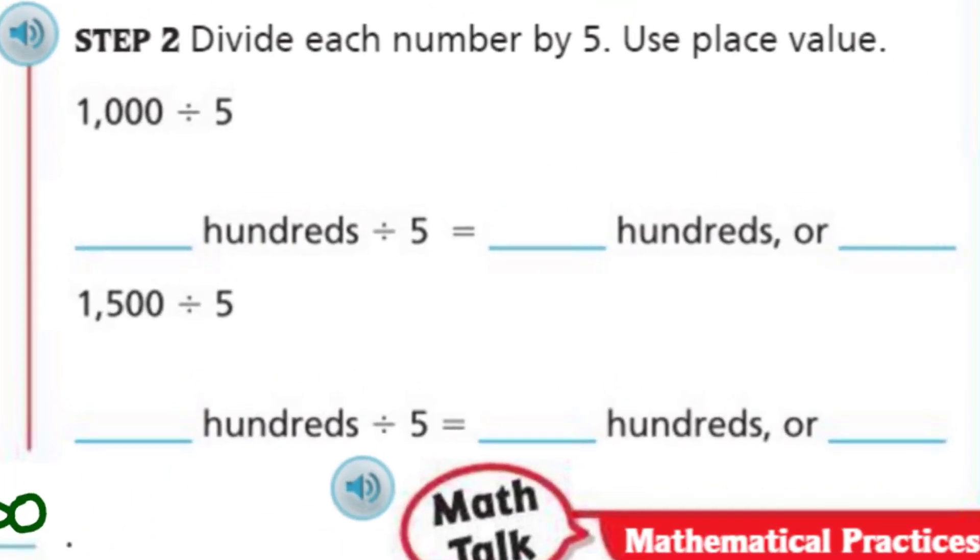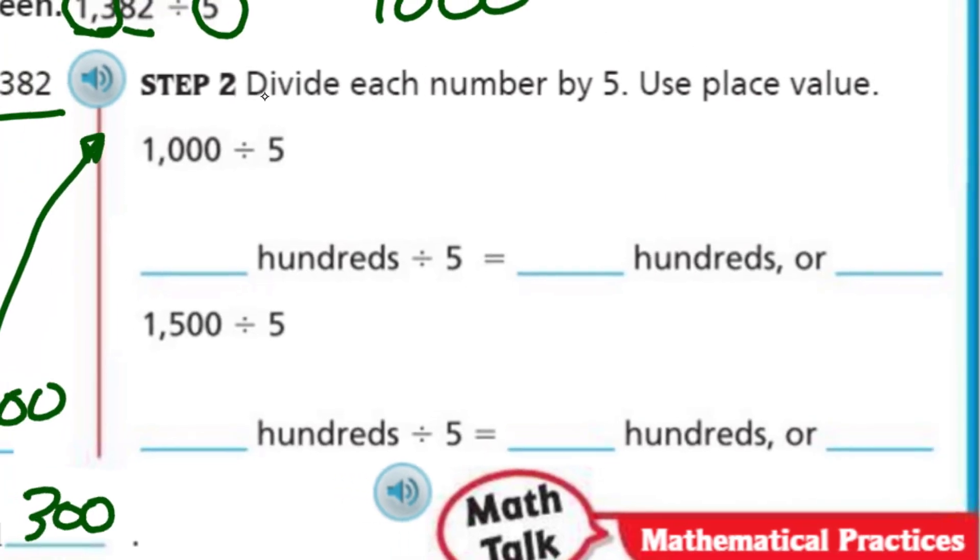Step two, divide each number by five, use place value. So we had our 1,000. So that's going to be how many hundreds? I hope you said 10 hundreds, right? Makes 1,000. If you put them together, 10 hundreds make 1,000. 10 hundreds divided by five is going to equal two hundreds or 200 written this way. So now we come down below. We have 1,500 divided by five. So if we were to write this number, 1,500, how many hundreds is 1,500? I just said it, 1,500. 1,500 divided by five is going to equal three hundreds or just 300.